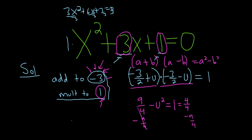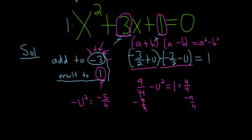So we end up with negative u² equals 4 fourths minus 9 fourths is negative 5 fourths. Okay, multiply by negative 1. So that's going to give us u² equals 5 fourths.